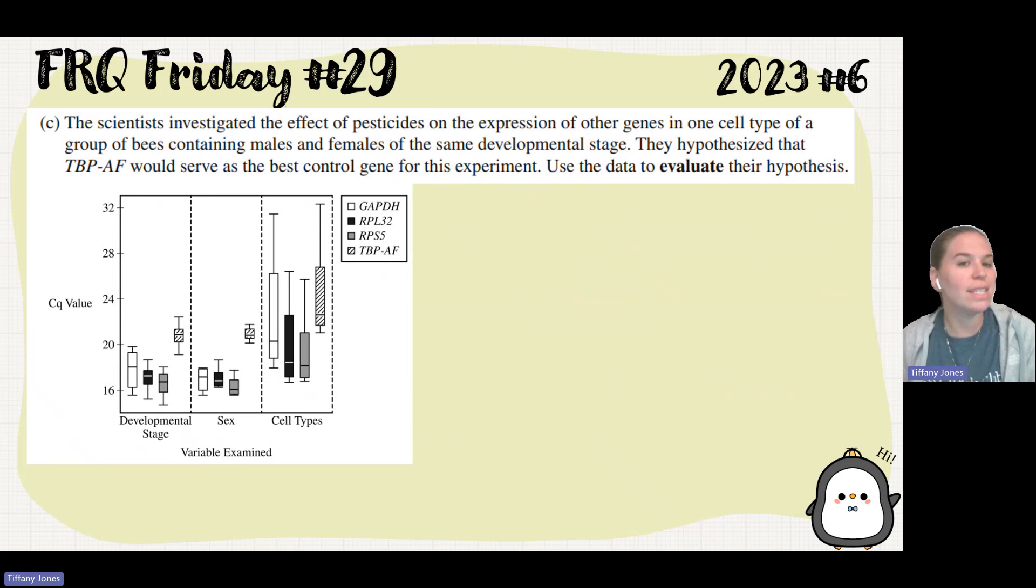Part C. The scientists investigate the effect of pesticides on the expression of other genes in one cell type of a group of bees containing males and females of the same developmental stage. They hypothesize that TBPAF would serve as the best control gene for this experiment. Use the data to evaluate their hypothesis. So we're looking at the sex, of course, and they're wanting us to use TBPAF. So we look at this. What we can see is that the actual range of its data, right, from the smallest number to its largest number, it's going to have the shortest distance. And that shows us that it is the best control because they said that if there's less variability in it, that was going to be favorable.